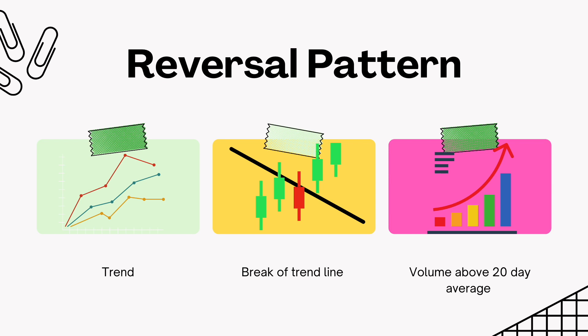Reversal patterns could occur at the top of the trend or at the bottom of the trend. And of course, size matters. The bigger the pattern, the stronger the move is likely to be once a breakout from the pattern materializes.